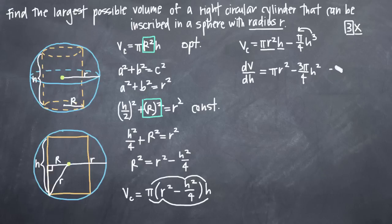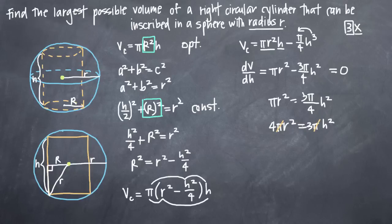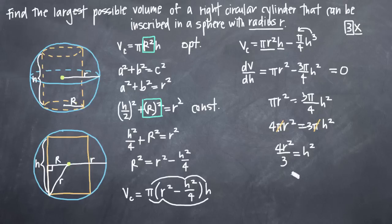Setting the derivative equal to zero and solving for h: add 3 pi over 4 h squared to both sides to get pi r squared equals 3 pi over 4 h squared. Multiply both sides by 4: 4 pi r squared equals 3 pi h squared. Divide both sides by 3 pi — the pi's cancel — leaving 4r squared over 3 equals h squared. Taking the square root of both sides gives h equals 2r over the square root of 3.